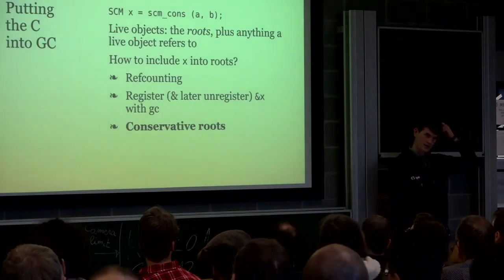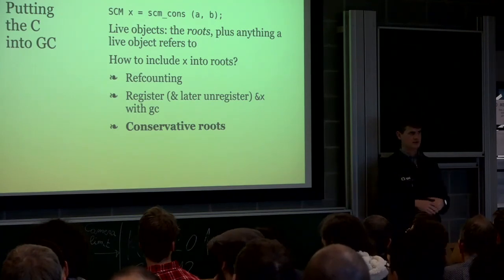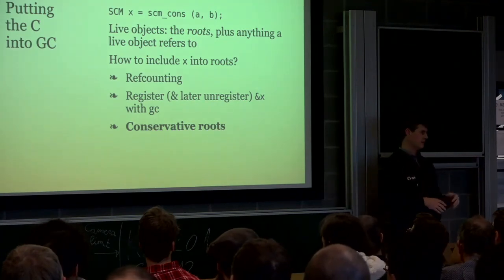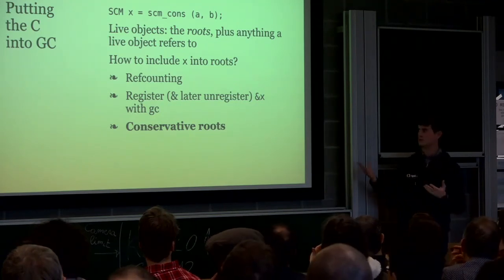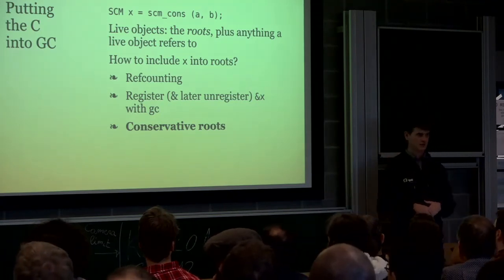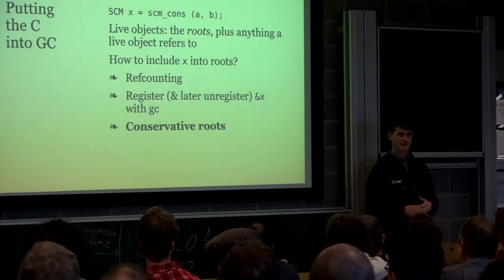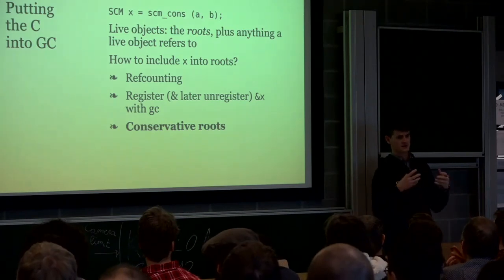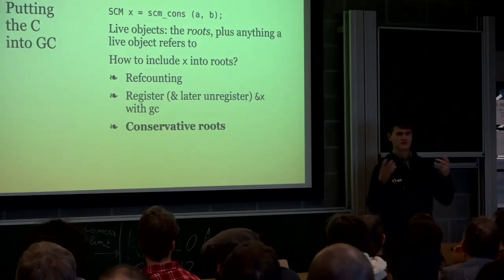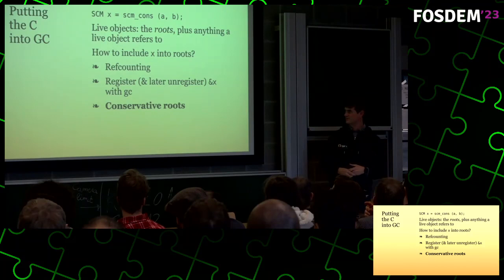Guile is a garbage-collected language. Data is allocated by the garbage collector, and the garbage collector takes responsibility for freeing it. When you cons a value and make a new object, you need to include it in the set of live data. A live object is one of the roots or anything referred to by a live object — it's a circular definition, you compute the fixed point of this computation.